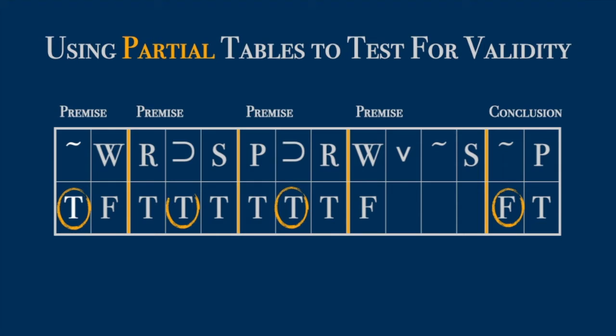And that is a problem because negation flips the T to F, and now we have a false disjunction. Ah, we were so close to having all true premises and a false conclusion. So let's back up and change the S to false. That way, the negation will flip it to T and we'll have a true disjunction. Nice.